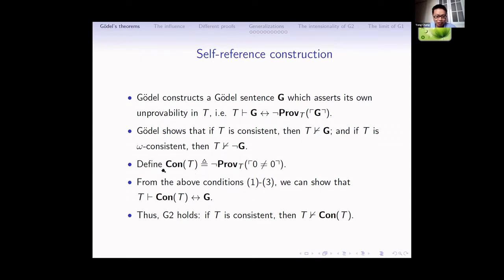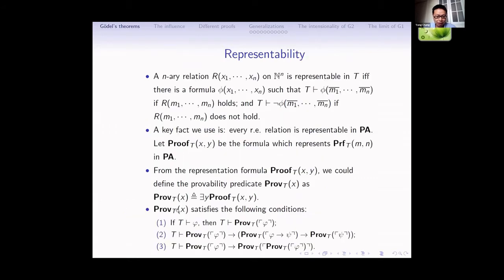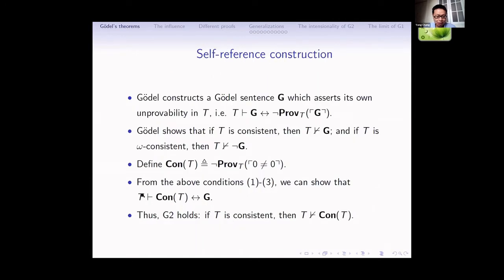This is the canonical way to define the consistency statement. We say T is consistent, which means that the contradiction zero ≠ zero is not provable in T. From the three conditions of the provability predicate, we can show that over T, Con(T) is equivalent to G. We have shown that if T is consistent, then the Gödel sentence is not provable in T. So we get G2: if T is consistent, then the consistency of T is not provable in T.